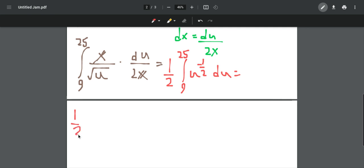So I get 1 half, and then in brackets, the integral of u to the negative 1 over 2—we add 1, we get 1 half, divide it, we get 2 times u to the 1 over 2, which is just 2 times the square root of u.